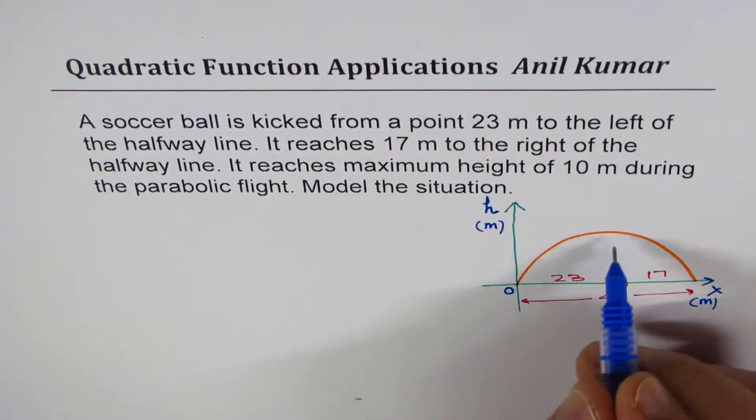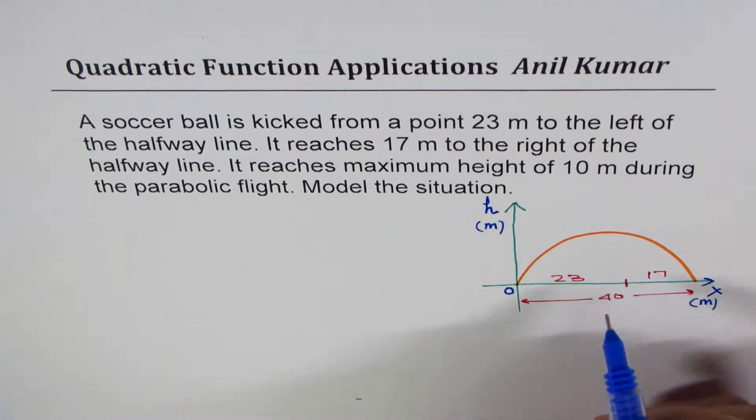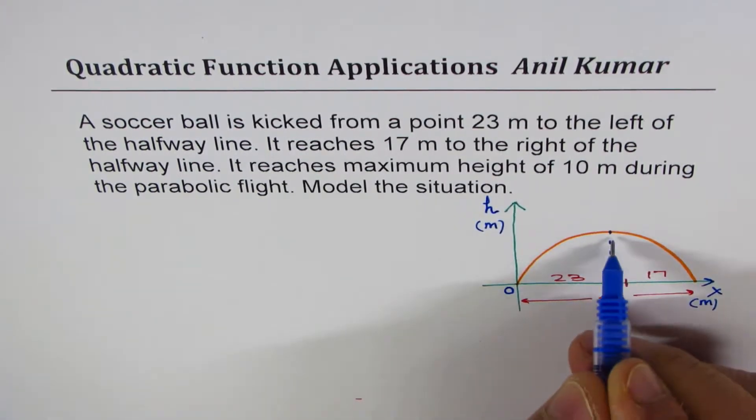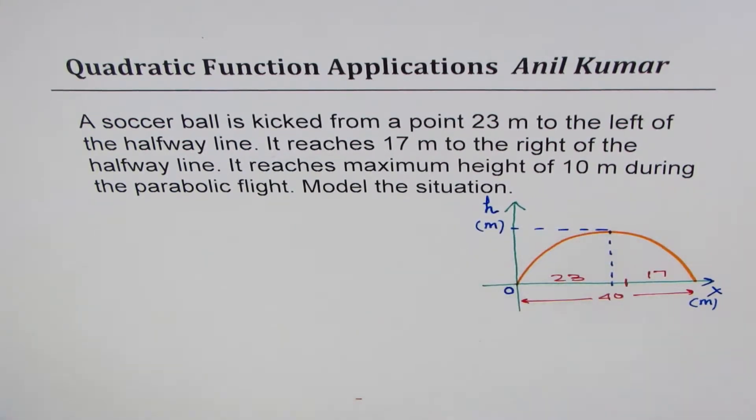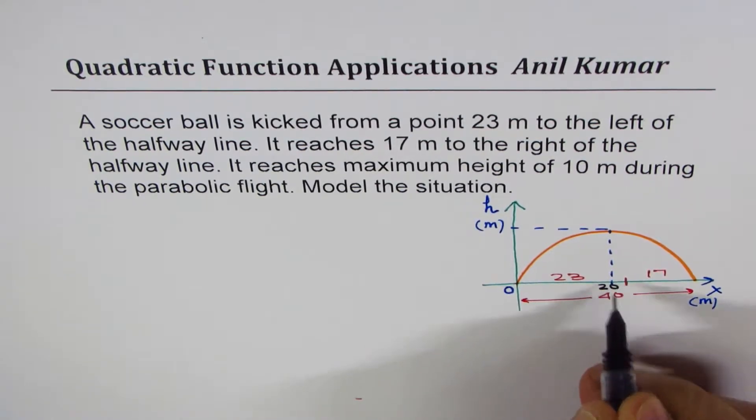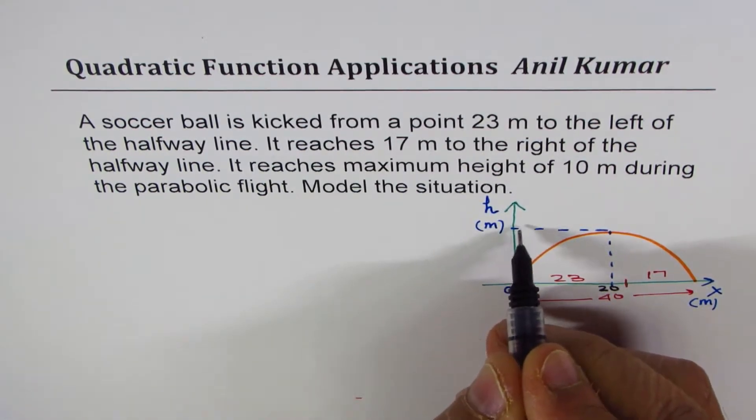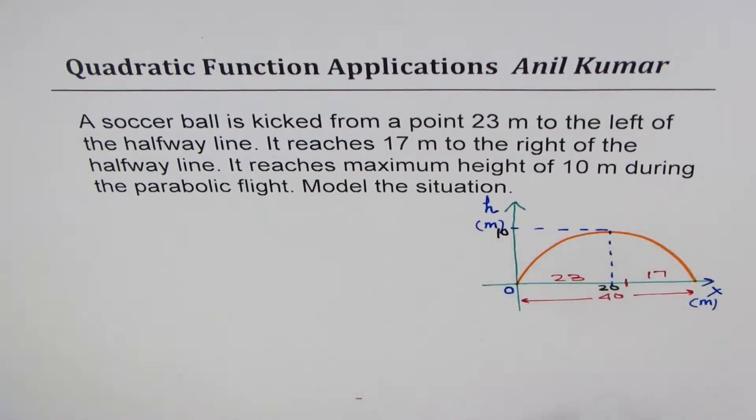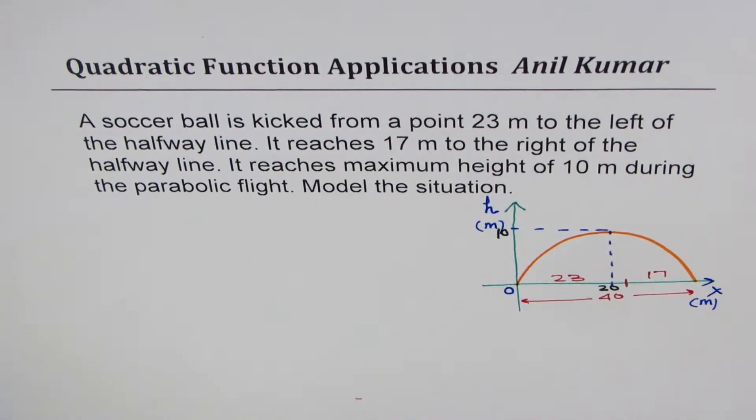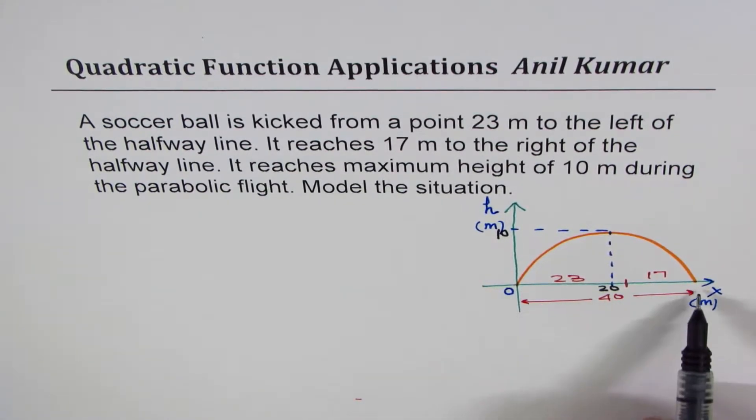So maximum height will be reached midway. So midway means somewhere here. That is the maximum height. Distance should be 20, half of 40, and the height is 10. That should help you to model the situation. So you can actually pause the video, answer the question, and then look into my suggestions.